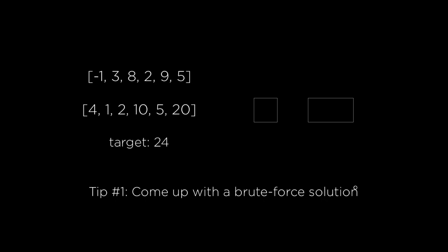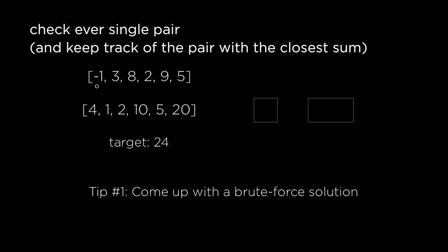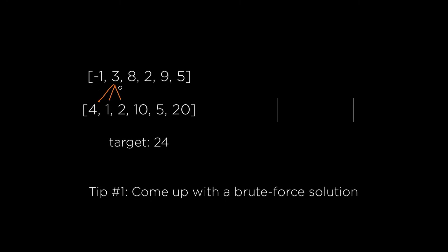Whenever I try to solve a coding interview problem, the first thing I like to do is come up with a brute force solution. In this case, a naive brute force would be to check every single pair. Since there are n² possible pairs — assuming each array has length n — this solution would take O(n²) time. This might be all you need depending on the interview, so I would ask the interviewer: 'This is a brute force solution — should I look for a more efficient one?'